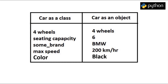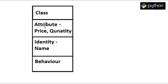For example, every car will have 4 wheels, will be used to go from point A to B, and would have some seating capacity. Let's take another example. Suppose we have a store consisting of different kinds of items, and each item has a price, quantity, name, and a kind of behaviour. If we want to define every item of the store, we need to create a class called item, and every item will have an attribute of price and quantity. It would have a name and it would have a behaviour.